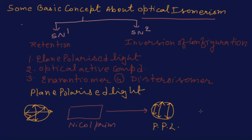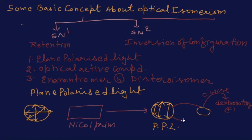If this plane polarized light falls on an organic compound and after falling on the compound it moves in the clockwise direction, then that compound is called dextrorotatory, represented by a plus sign. Similarly, if this light when it falls on the organic compound goes in the anticlockwise direction, then it is known as levorotatory, represented by a minus sign.